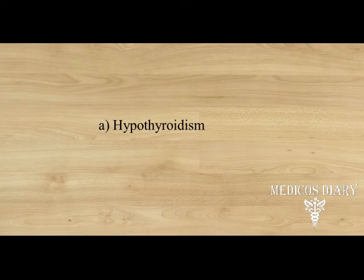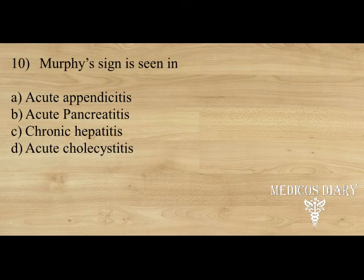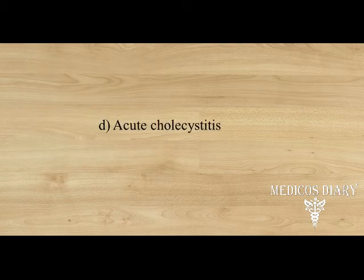Next one: Murphy's sign is seen in — Option A) Acute appendicitis, B) Acute pancreatitis, C) Chronic hepatitis, D) Acute cholecystitis. Answer: Option D — Acute cholecystitis.